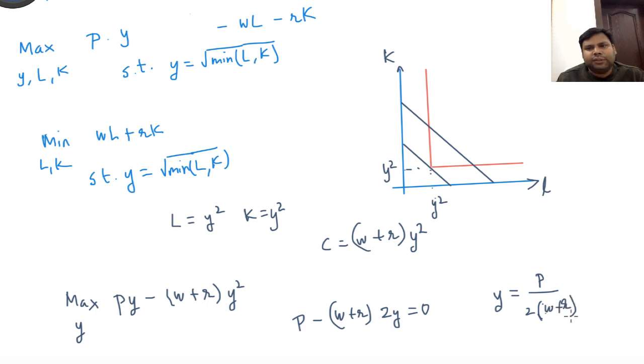And if you want to figure out the input demands, input demand will then be L equals Y square. So square of this: L equals K equals P square by four (W plus R) square.